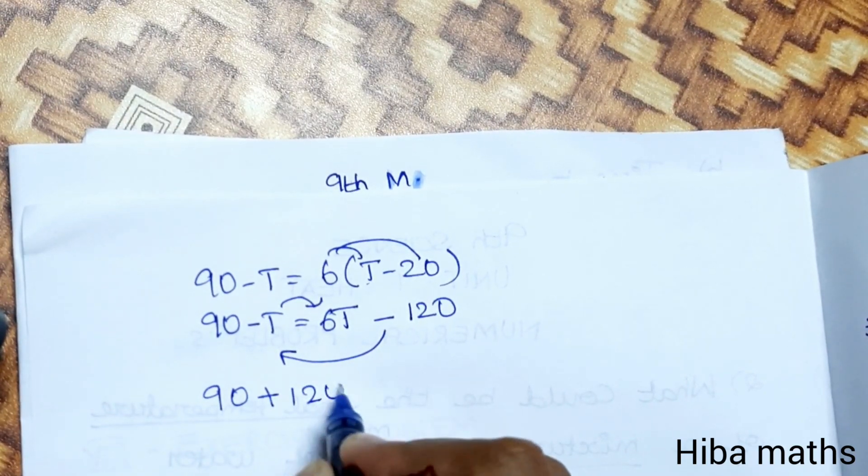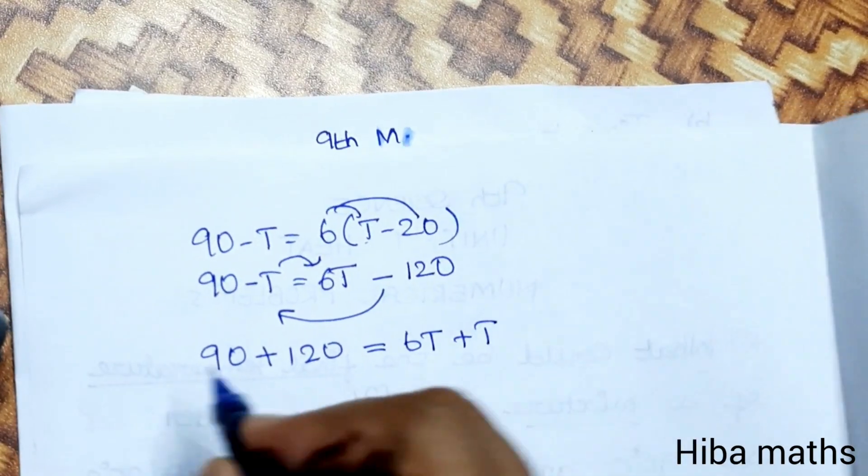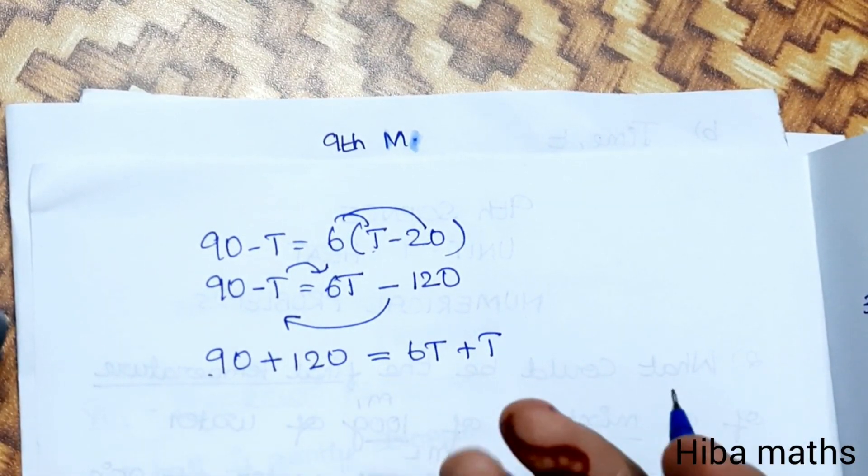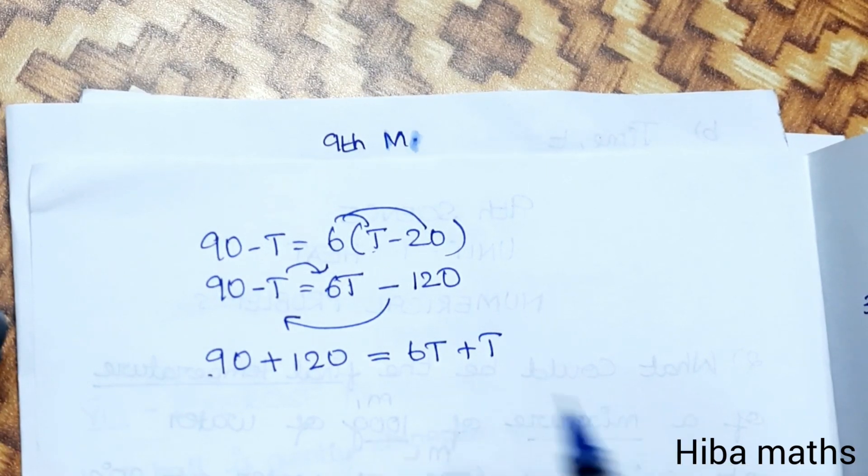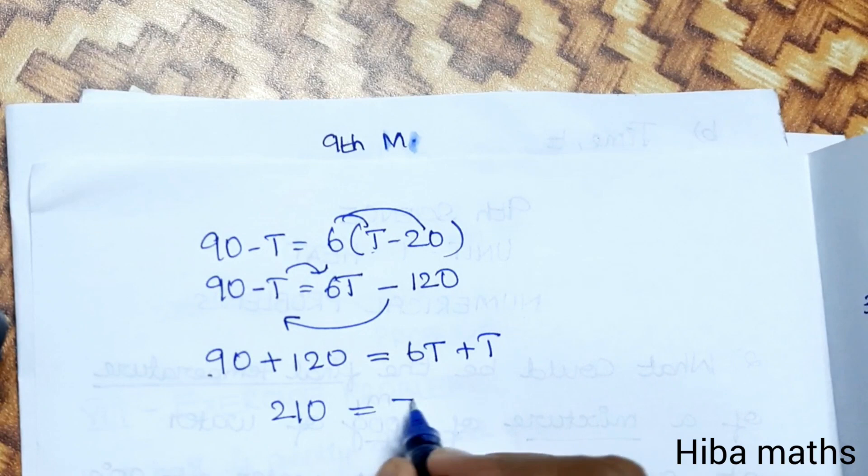Moving the T to one side: 90 plus 120 equals 6T plus T. So 210 equals 7T. Therefore 90 plus 120, which is 210, equals 6T plus T, giving us 7T.